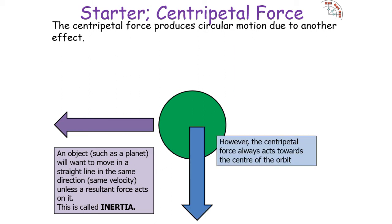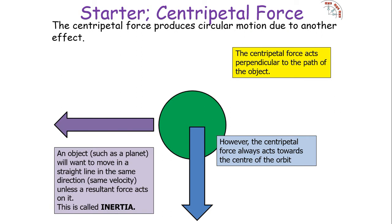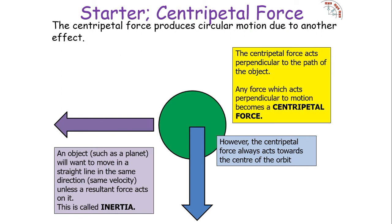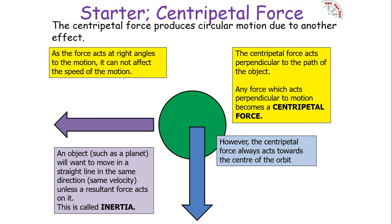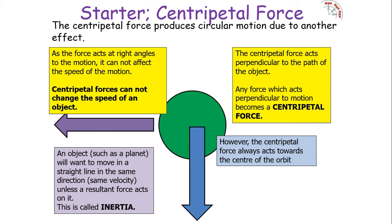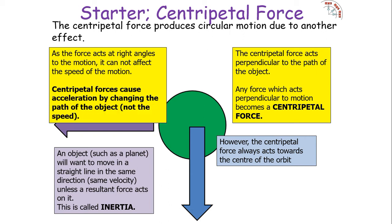This is Newton's first law of motion. The centripetal force always acts towards the centre of the orbit and perpendicular to the path of the object — that's another way we can define the centripetal force: any force which acts perpendicular to motion. As the force acts at right angles to motion, it can't affect the speed of the motion. So centripetal forces can't change the speed of an object, but they can change the direction. Centripetal forces cause acceleration by changing the path of the object, not its speed — it causes acceleration by deflection.